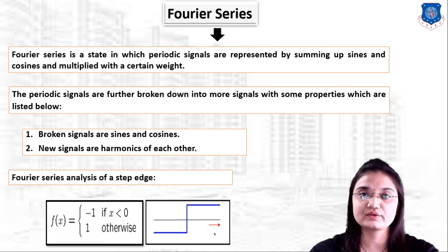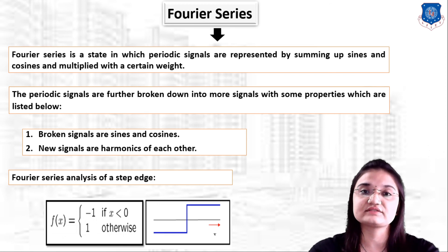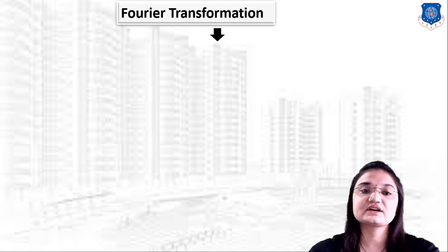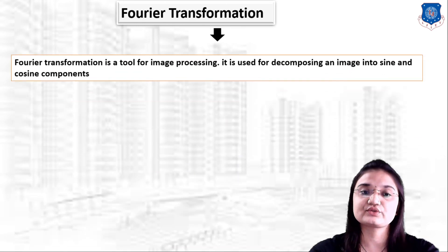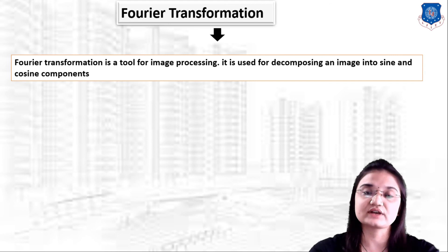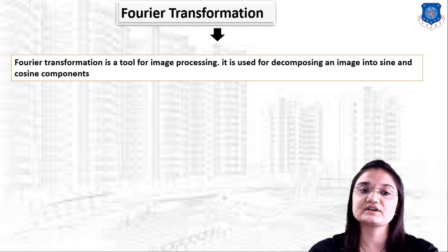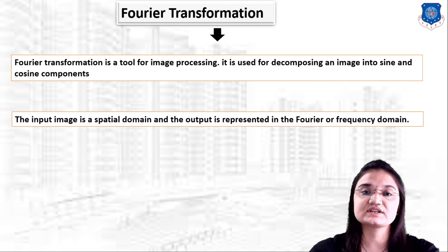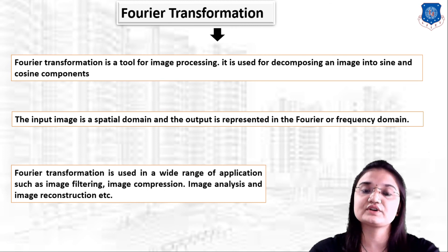With the help of Fourier transform we can easily analyze a periodic signal and convert it into a continuous sine or cosine wave. Fourier transformation is a tool for image processing used for decomposing an image into sine and cosine components. The input image is in the time domain or spatial domain, and the output is represented in the Fourier or frequency domain. With Fourier transform we can easily convert a time domain function into the frequency domain.